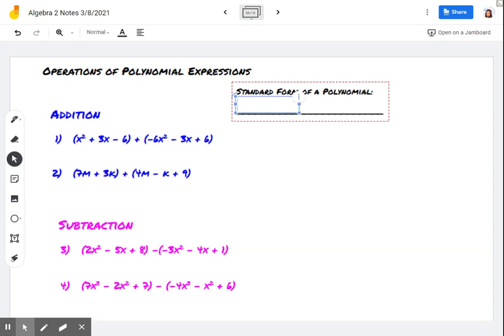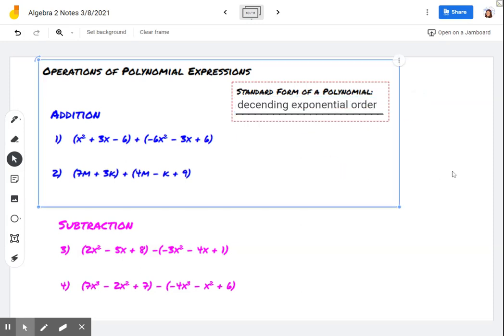So standard form of a polynomial first has to be in descending exponential order. It doesn't sound that fancy. So let's put it in here, descending exponential order. All this means is that all of our exponents have to be in order from highest to lowest.